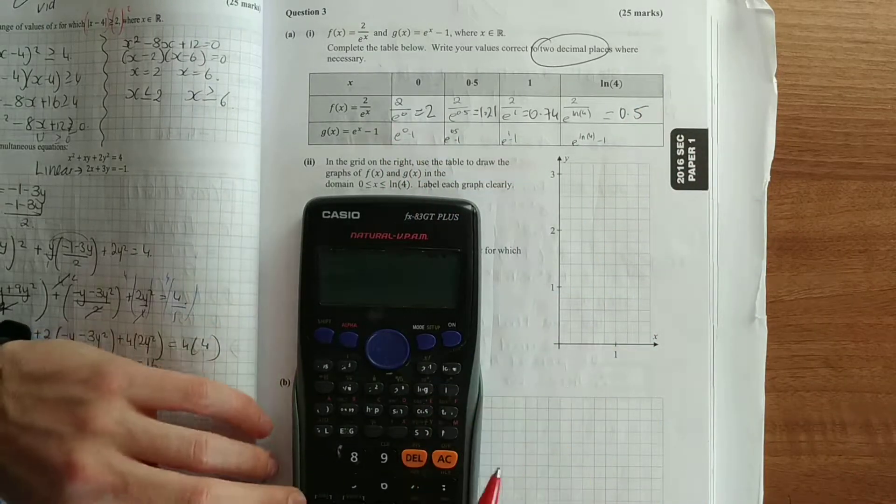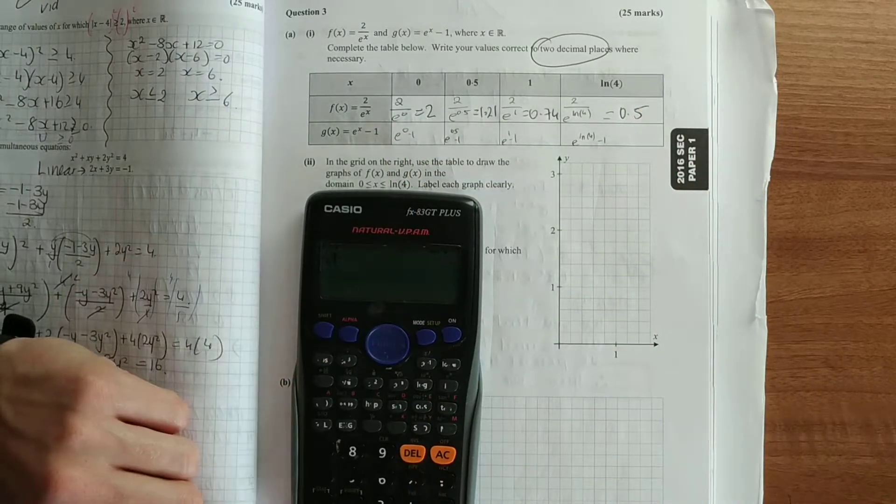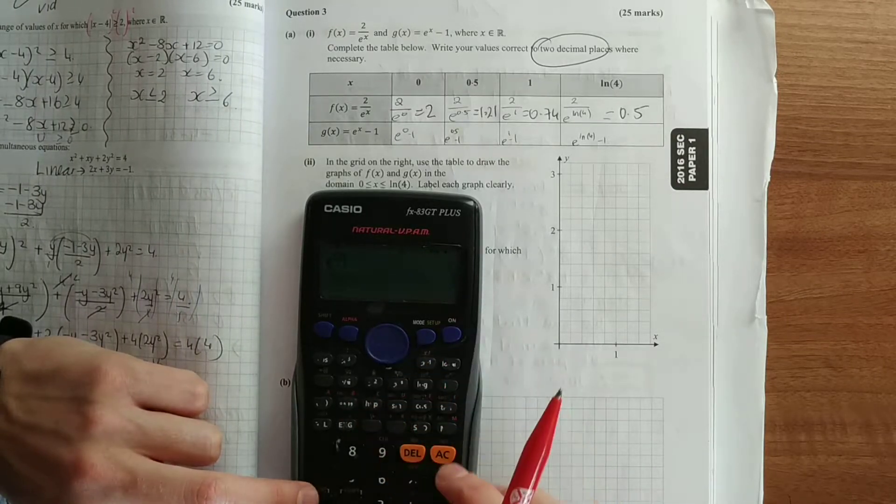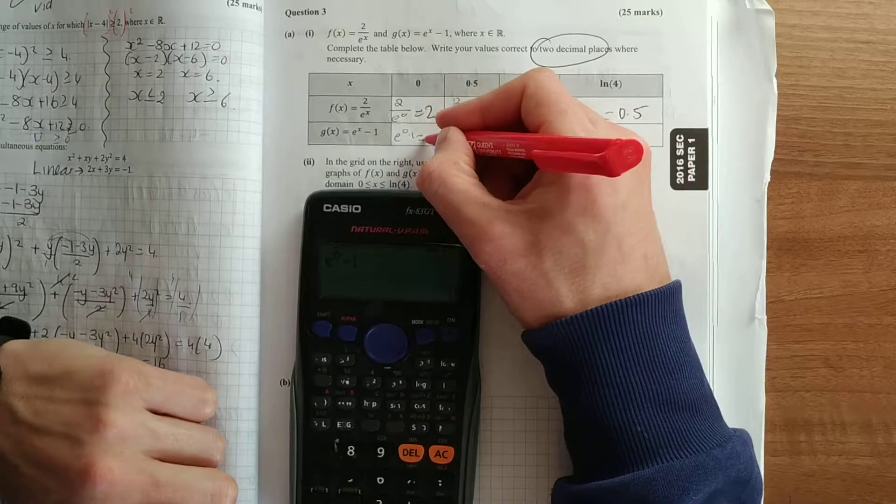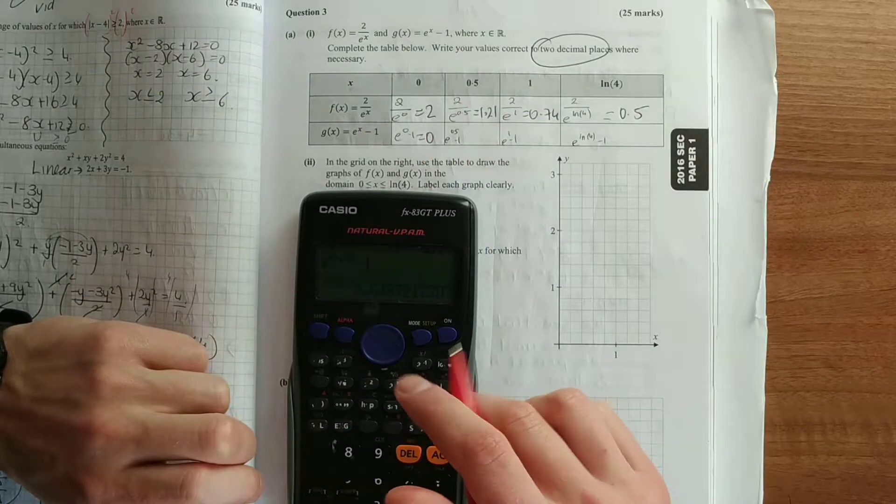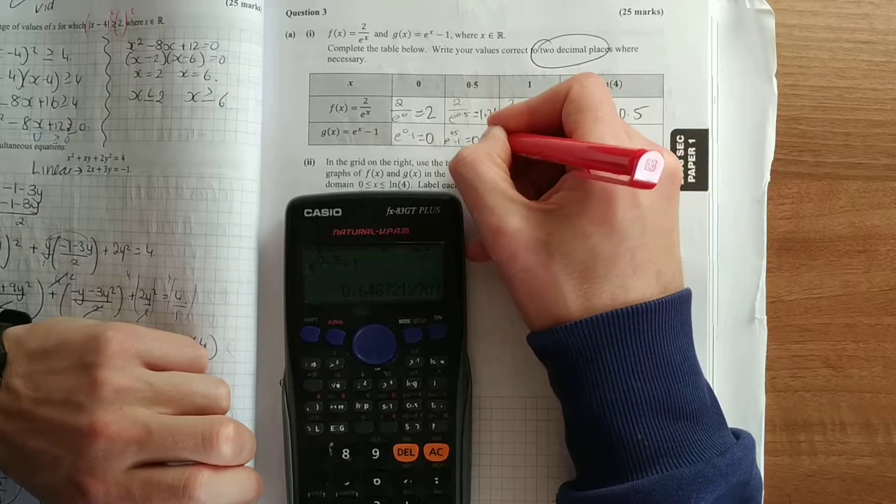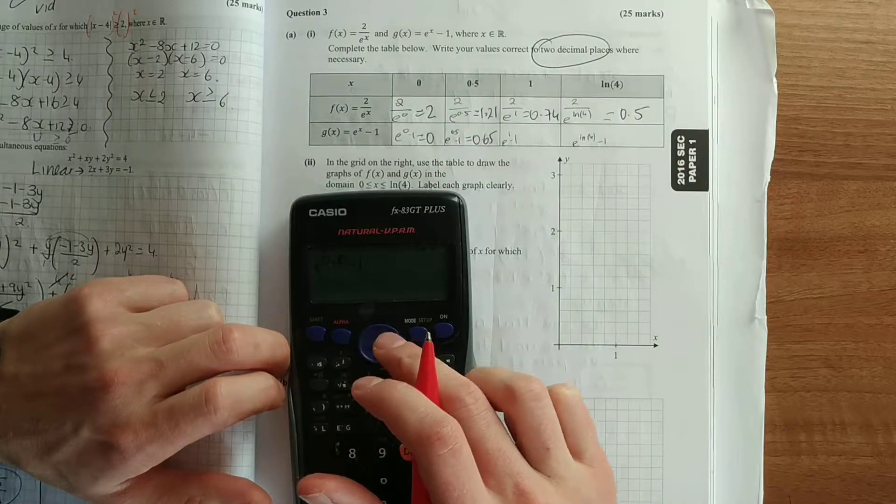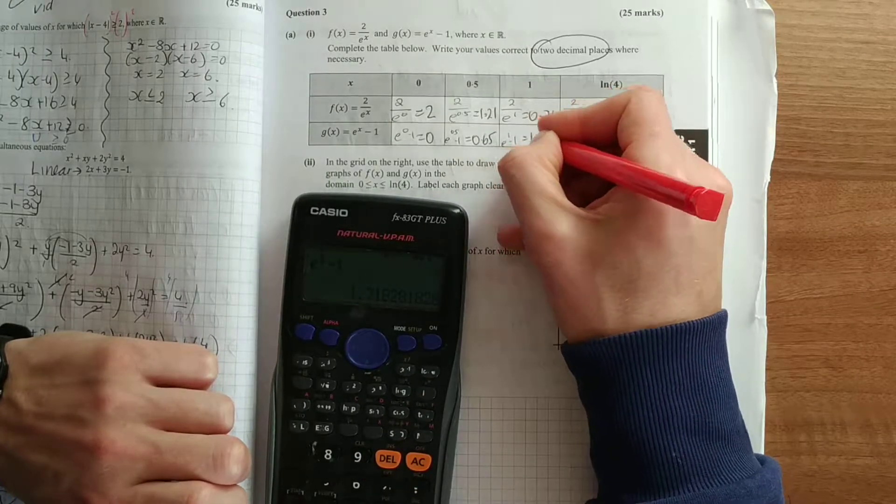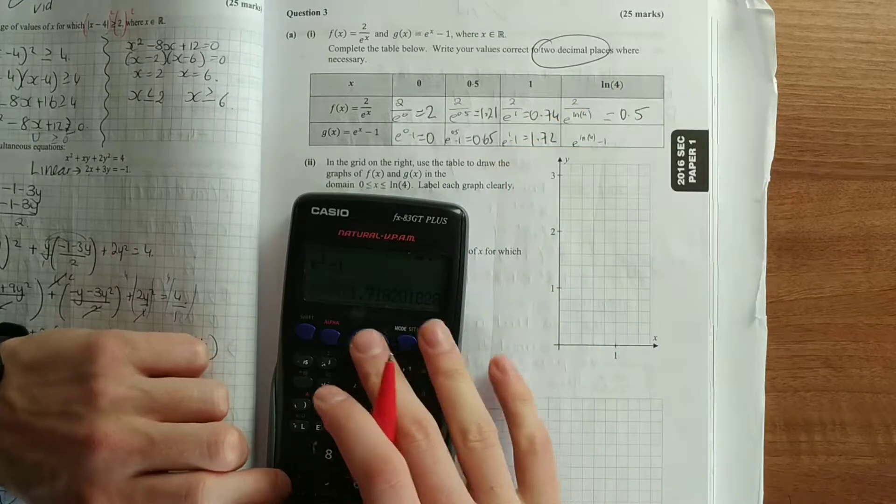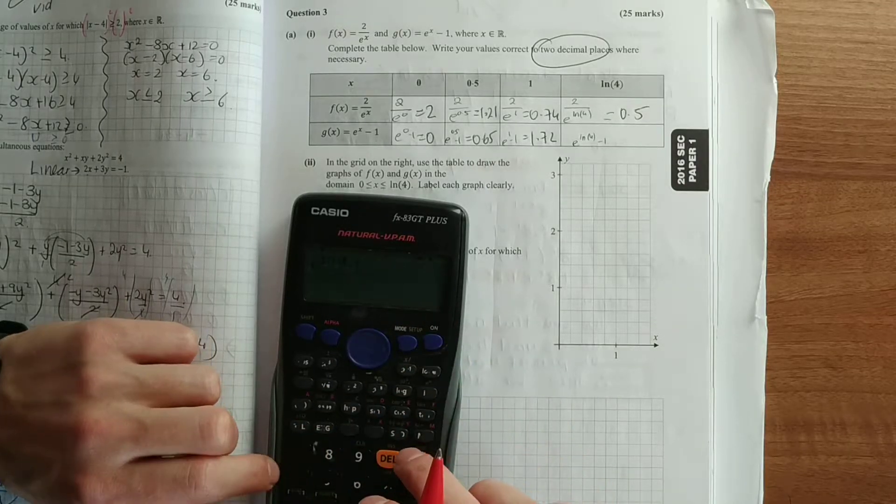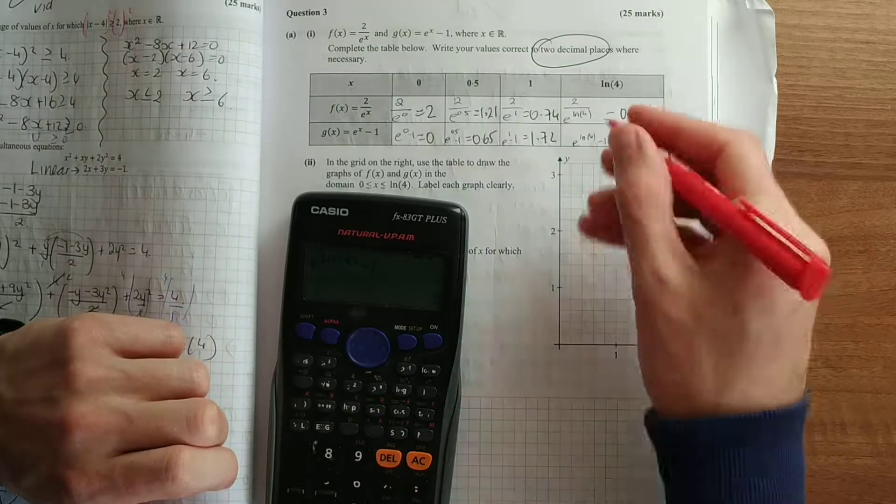Next one, there's our e to the power of 0 minus 1, which is 0. And then go back and change it to 0.5, 2.65, 1.72. And again, ln of 4 is 3.